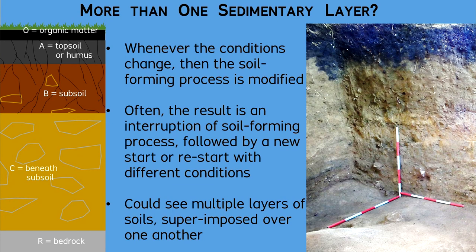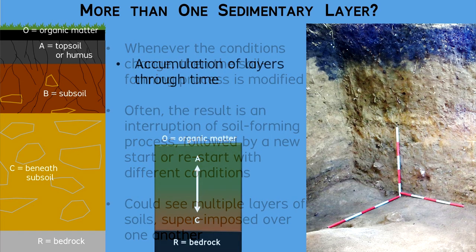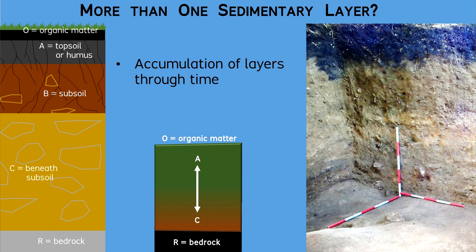Generally, soil formation will be interrupted whenever the conditions of the environment happen to change. The cultural use of a ground surface potentially could result in such a change, and the outcome can be enhanced when it coincides with other factors such as change in climate, or local vegetation, or the patterns of slope erosion and deposition. Whenever people occupy a ground surface, the underlying sedimentary unit contains some degree of soil formation, such as in the idealized profile of soil horizons overlying the geological bedrock. Artifacts are deposited on the surface, and they can become mixed into the upper zone of the sediment.